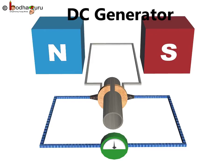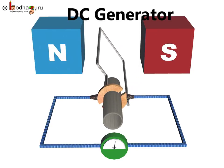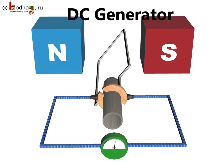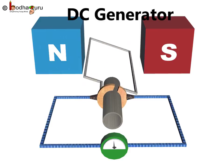But here, instead of passing current through the coil, in a DC generator, we rotate the coil to produce electricity. Thus, mechanical energy gets converted into electrical energy in form of direct current in case of a DC generator.